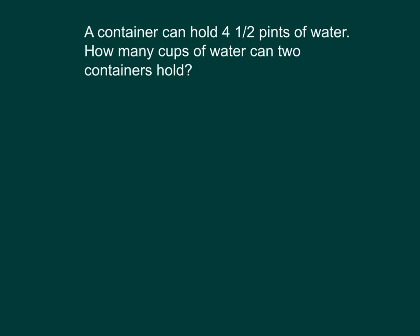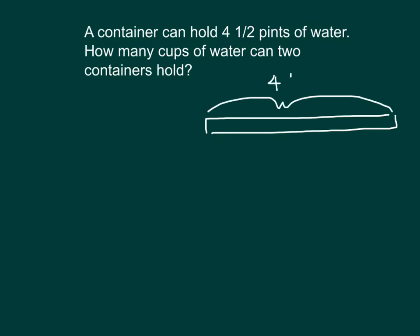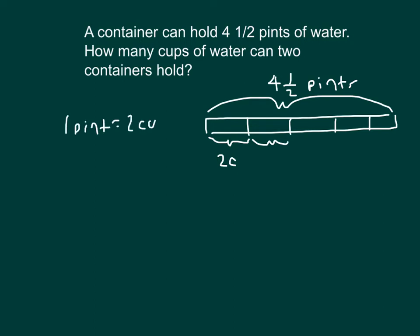Let's draw a tape diagram for four and one-half pints. This is the entire diagram that represents four and one-half pints. We'll go ahead and partition where each section equals one pint, which is also equal to two cups. Remember that the relationship is that one pint does equal two cups. So I have two cups there, two cups there, another two cups there, and another two cups there. And this right here is a half a pint, so a half of two is equal to one cup.